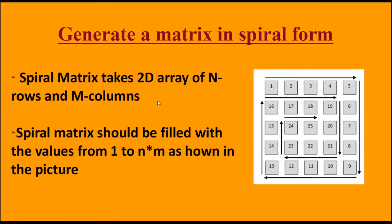The question is: we need to generate a matrix in spiral form. Your 2D array would print the elements in spiral form. A spiral matrix takes a 2D array of N rows and M columns. The spiral matrix should be filled with values from 1 to N×M. For example, if you have 3 rows and 2 columns, 3×2 equals 6, so you would have 6 index positions. Here we have considered a 5×5 matrix, so we get 25 values and the last value would be 25.